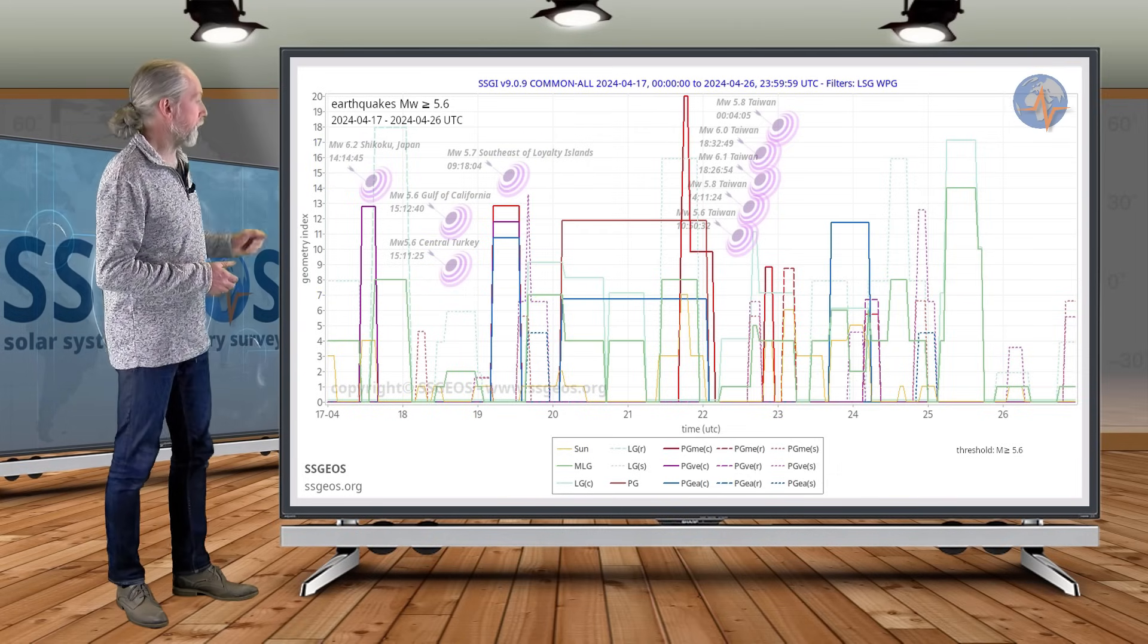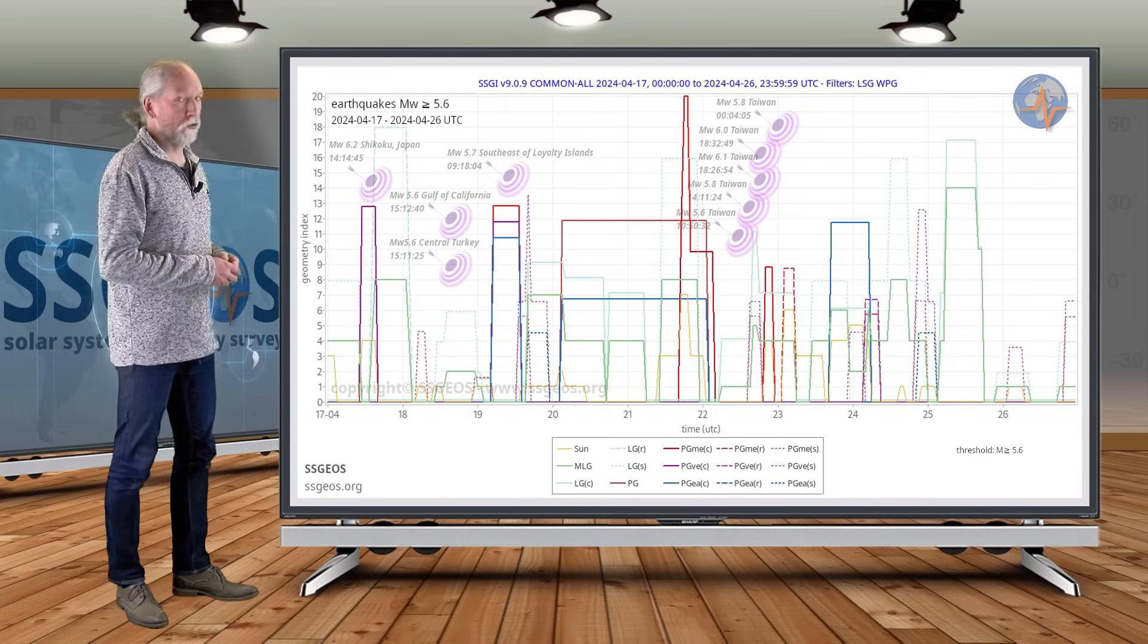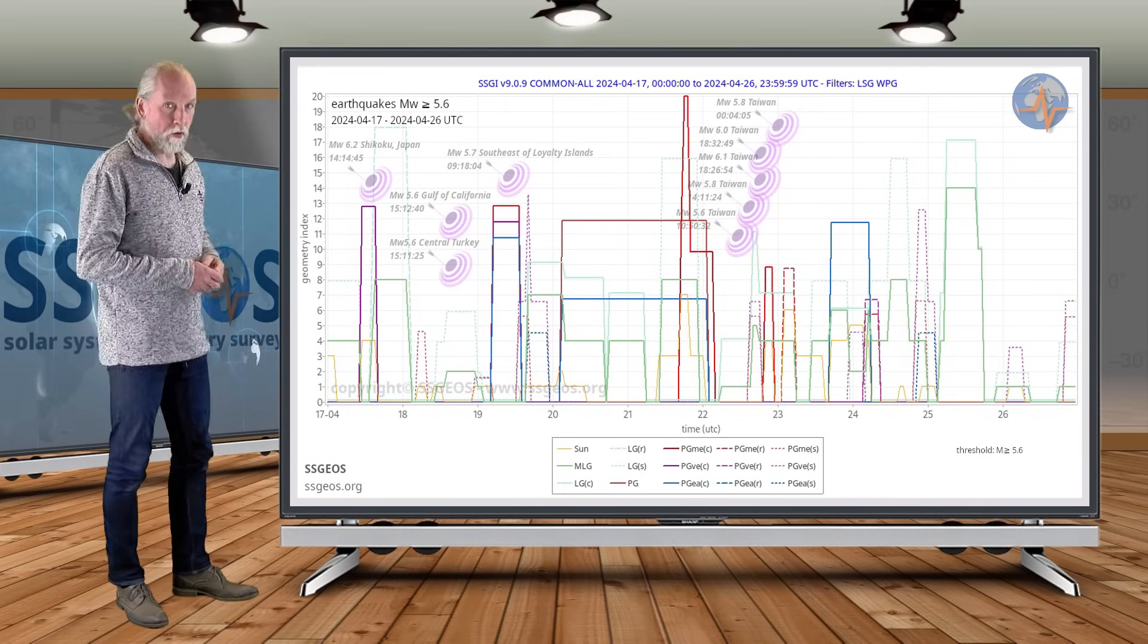These are the purple peaks on the 17th and on the 19th, and we see a cluster there of stronger earthquakes peaking 6.2 at Chichijima, Japan.